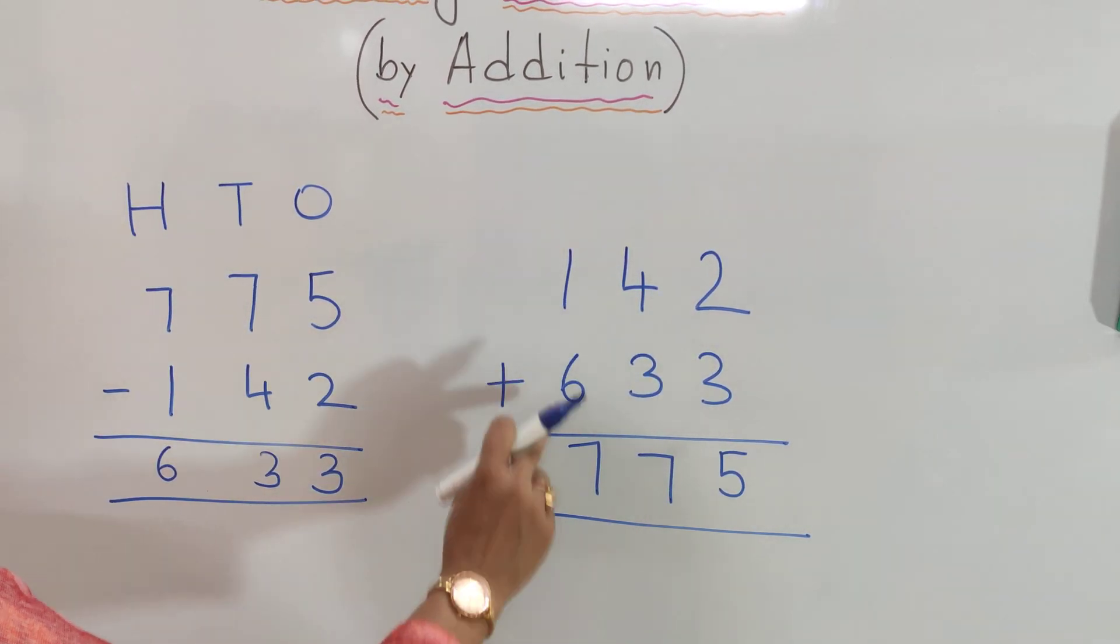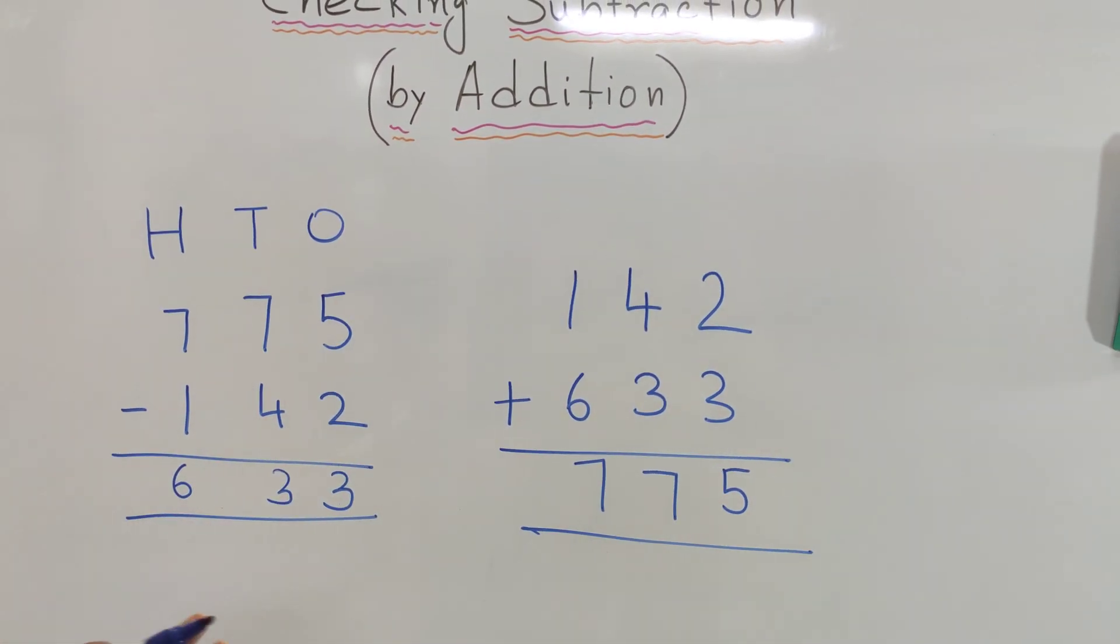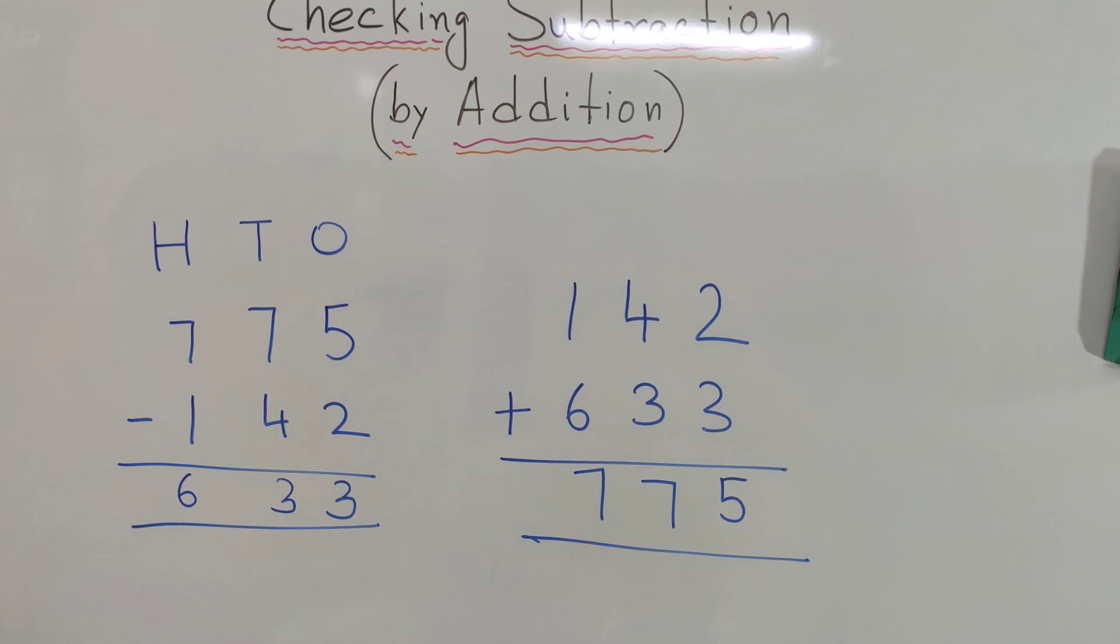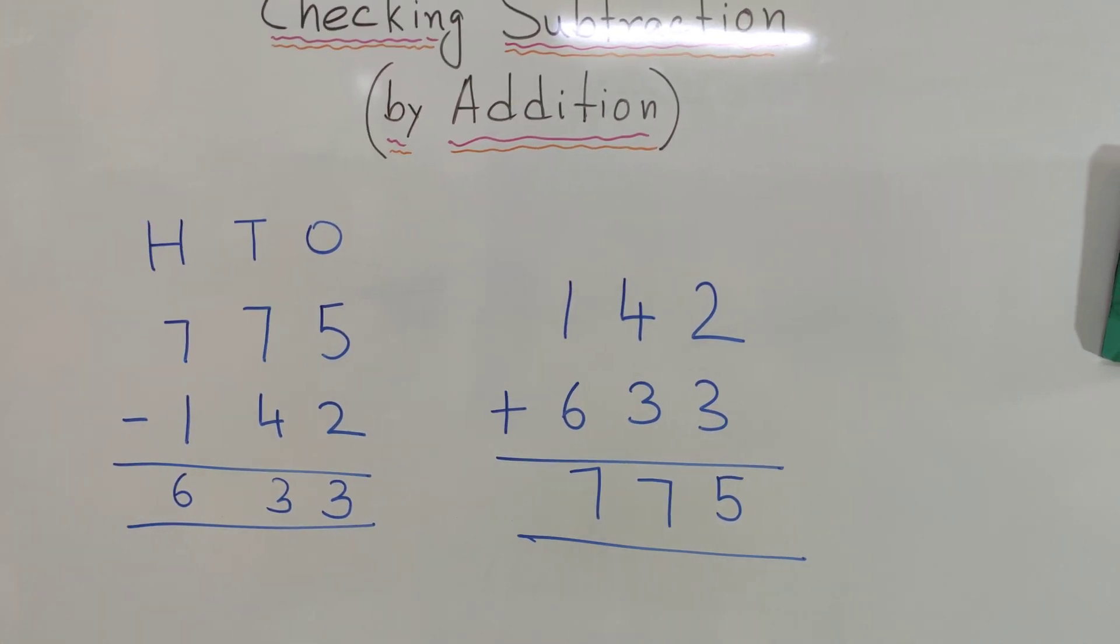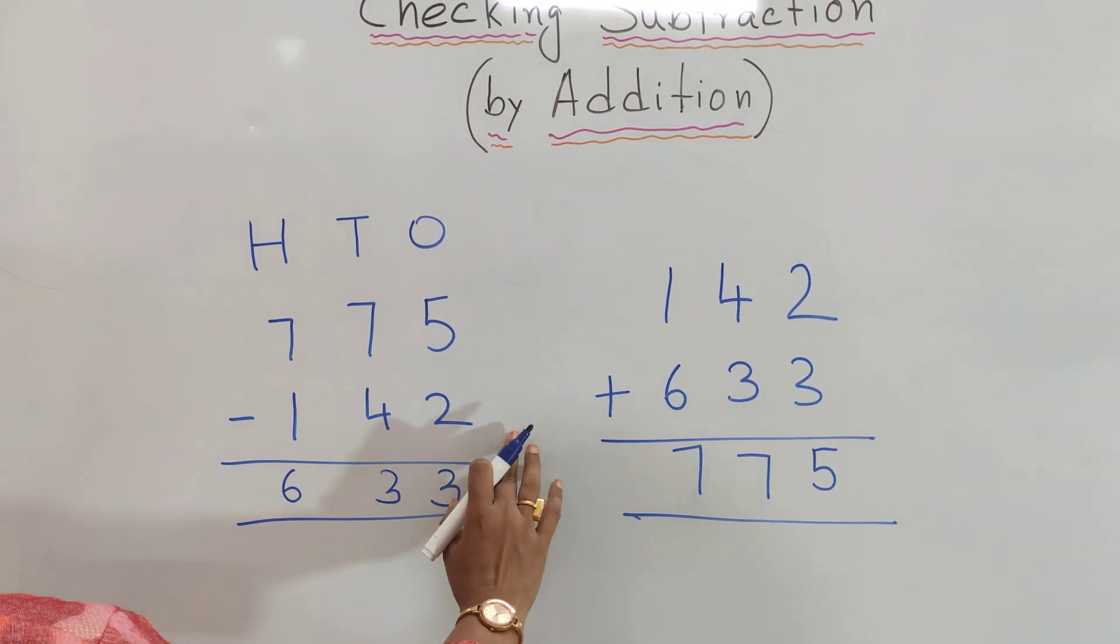So see, we get the addition 775. So from here we can understand how to check the subtraction by addition. So in simple words, let's understand clearly.